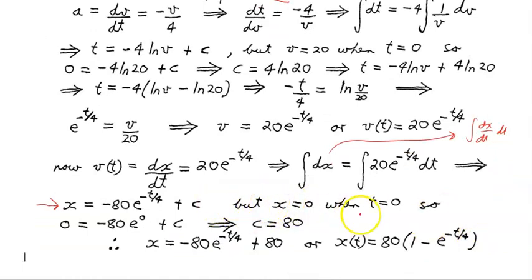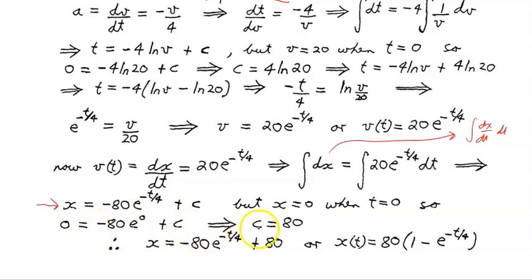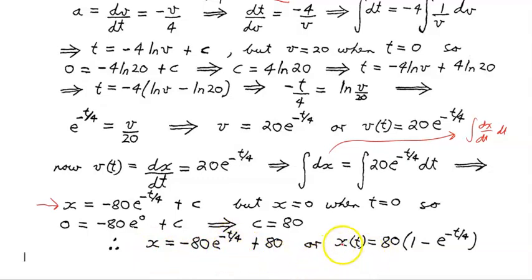We were told that x equals 0 when t equals 0. Substituting: 0 equals minus 80 times e to the power of 0 plus c. Since e^0 equals 1, we get 0 equals minus 80 plus c, so c equals 80. The position as a function of time is x equals minus 80 e^(−t/4) plus 80, or factorising: x equals 80 times (1 minus e to the minus t on 4).